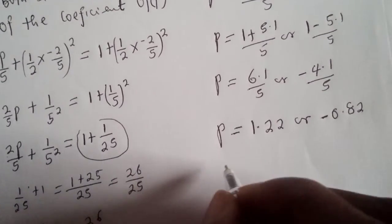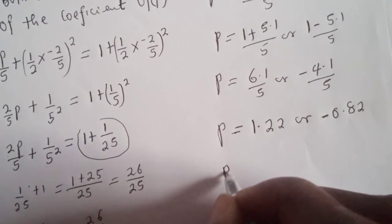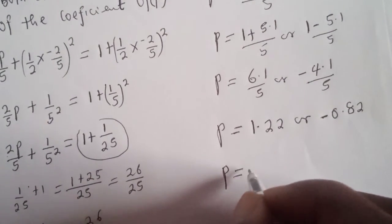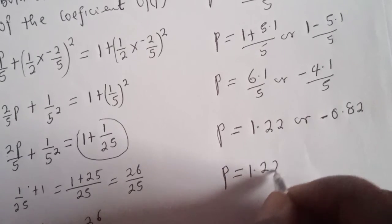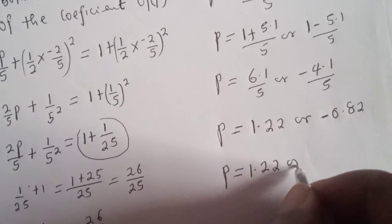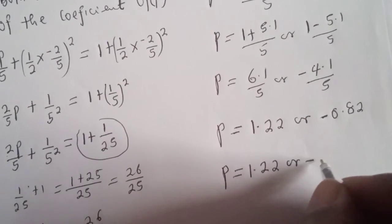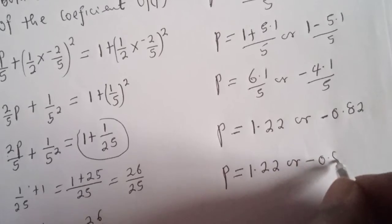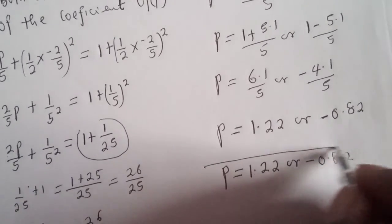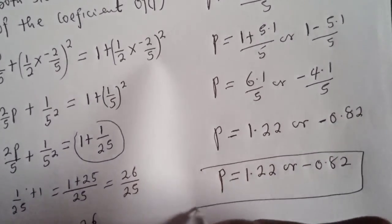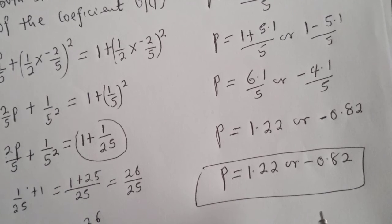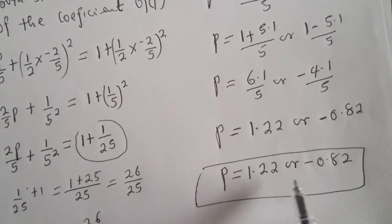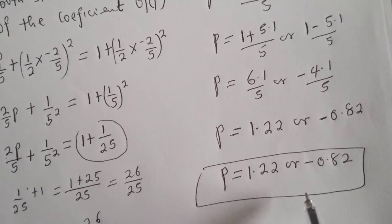Therefore, our final answers are p equals 1.22 or p equals negative 0.82. This is the final answer. If you enjoyed the class, please don't forget to like, share, comment, and subscribe. Thank you.